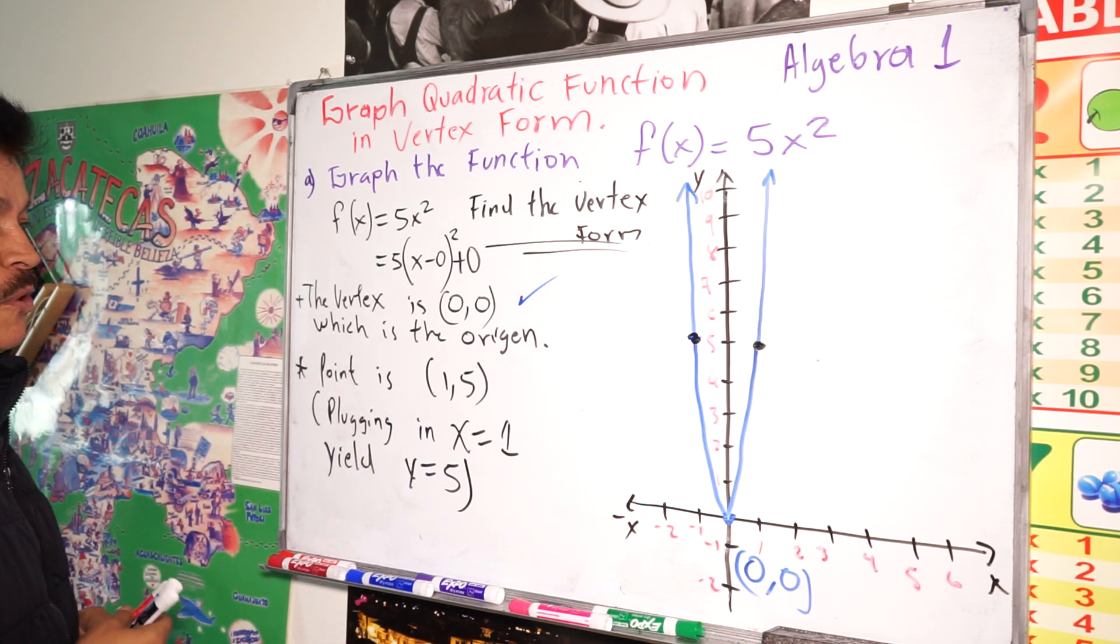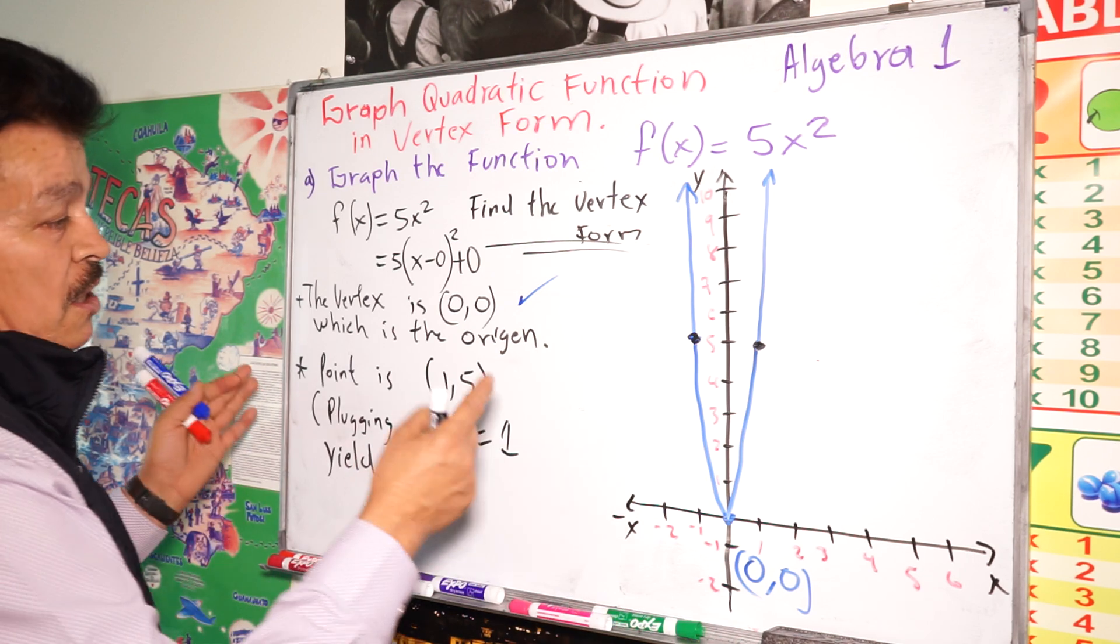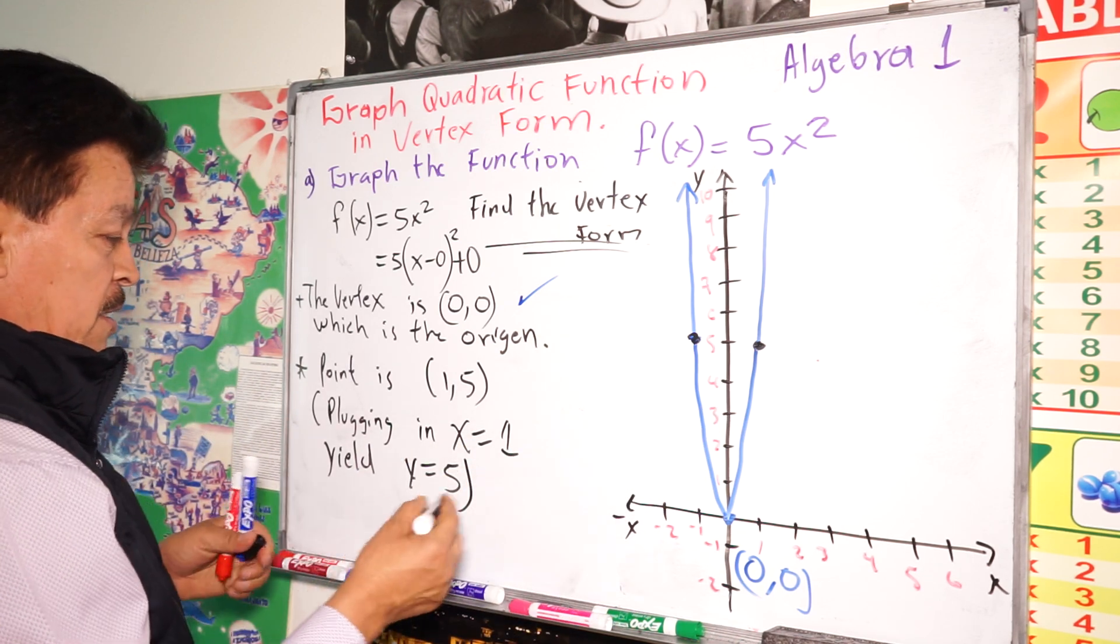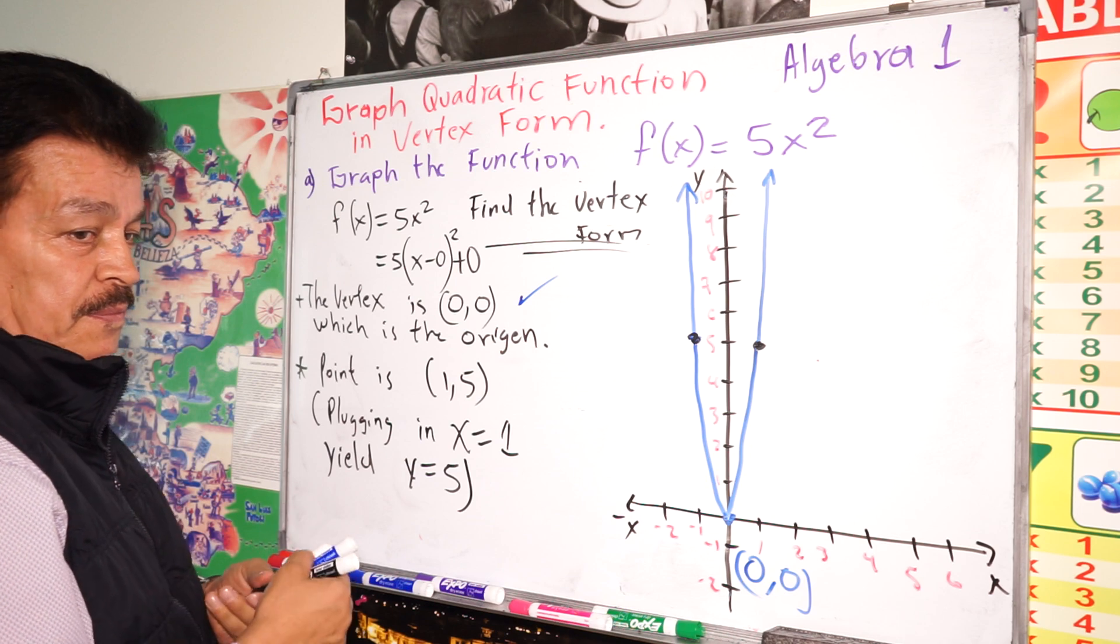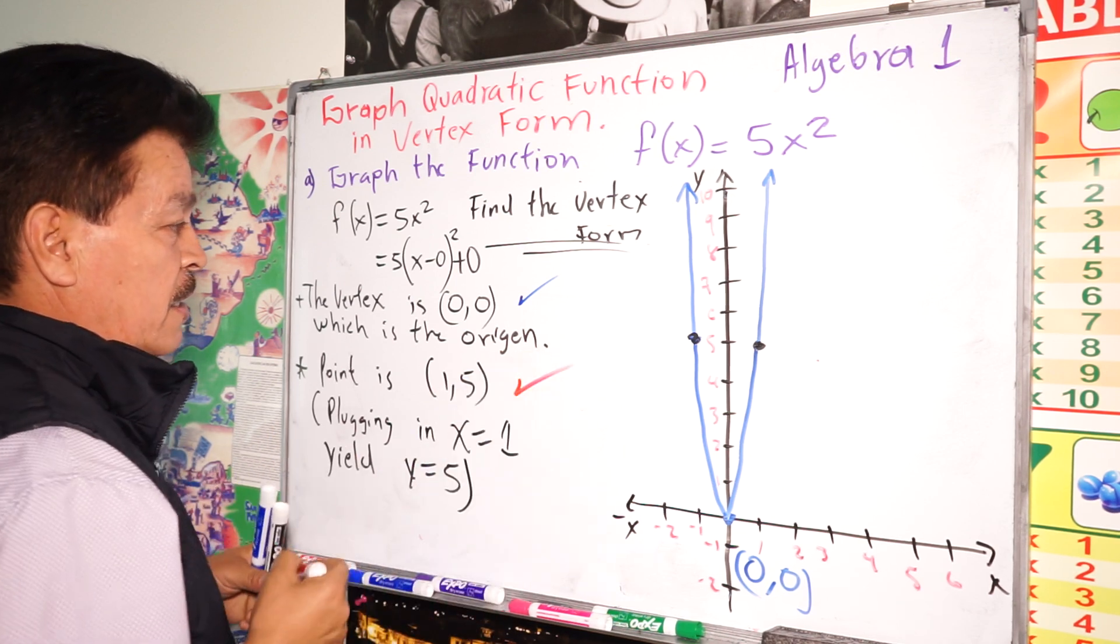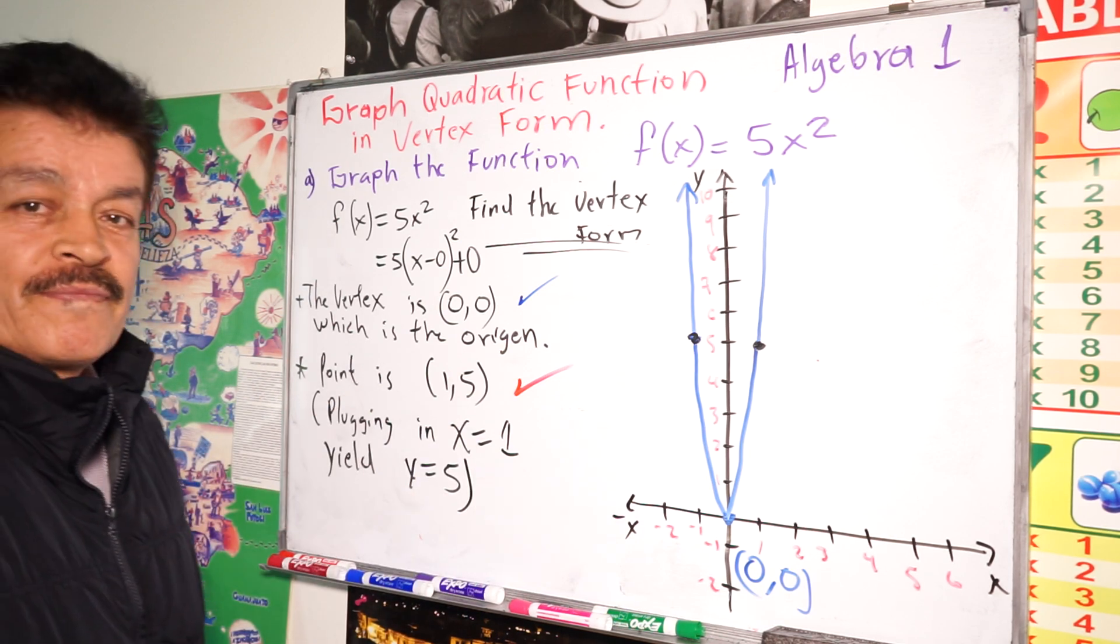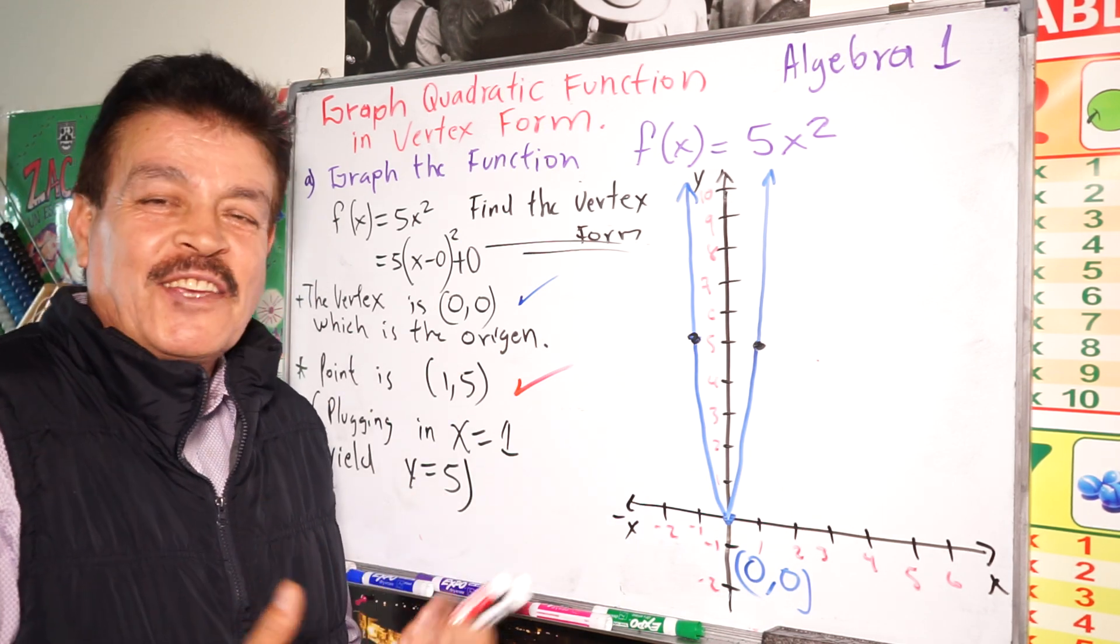So this is the parabola graphing the quadratic function in vertex form. This is the point here, the other point (1, 5), and (0, 0) is the origin. So it's done, very easy, simple. Thank you.